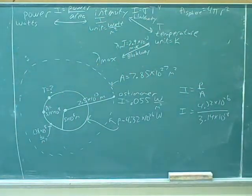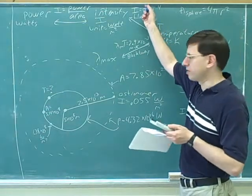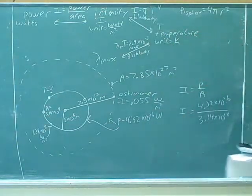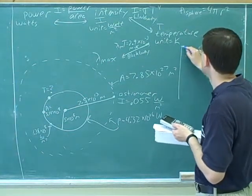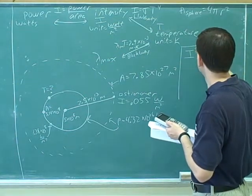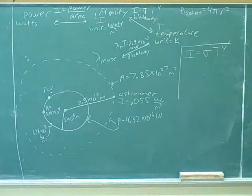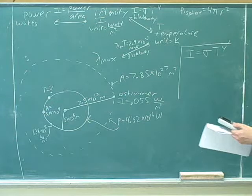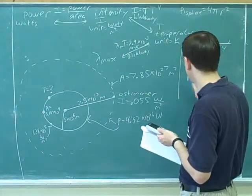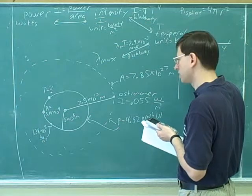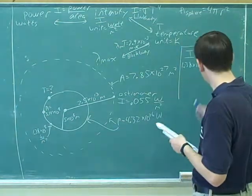Okay, good. So that equals sigma T to the 4th. Now we can use our blackbody equation here, because they told us this was a blackbody. Good. So what happens when we work with that? I divided by 9.67 times 10 to the negative 8th. Good.